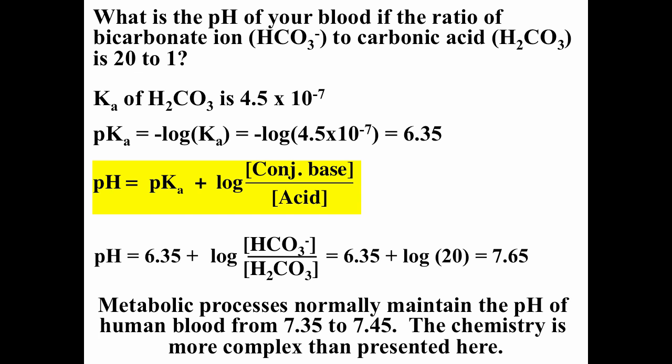Biological systems often use buffers to maintain a constant pH because protein structure actually depends on pH. Human blood is typically maintained at pH 7.35 to 7.45. One of the buffers in the human body is the bicarbonate ion / carbonic acid pair, but there are also other buffers, and it's a bit more complex than presented here.